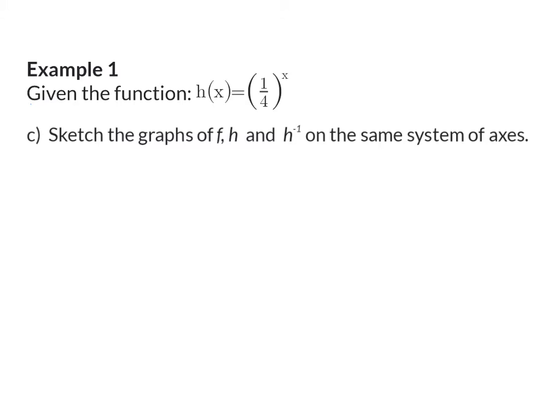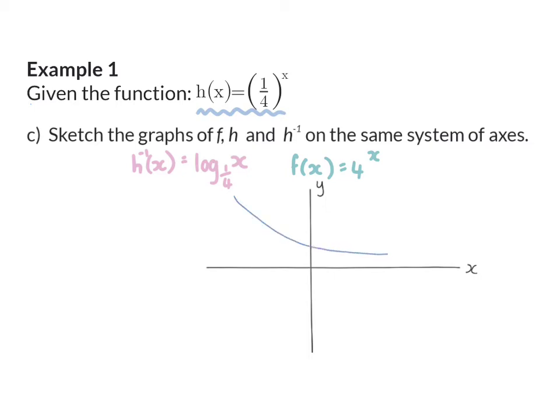Question C. Sketch the graphs of f, h, and h to the power of minus 1 on the same system of axes. When you have to draw graphs, it's important to know the form of each graph. So if we start with h(x), this is a quarter to the power of x, which will be a decreasing exponential graph. And it will cut the y-axis at 0, 1. And then you can add any coordinate on this graph. It's always important to show at least two coordinates on any graph. And I'm going to choose to substitute minus 1 into my equation, and then the y value will be 4.